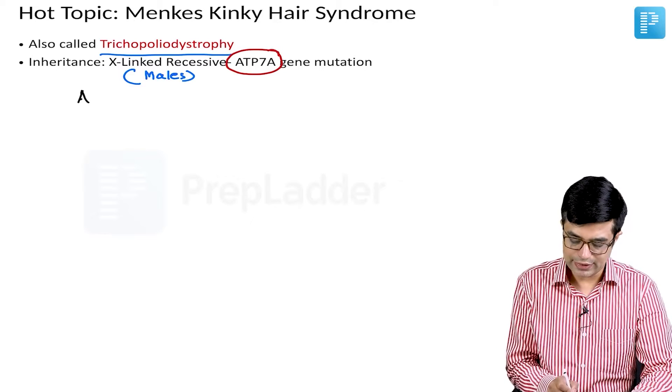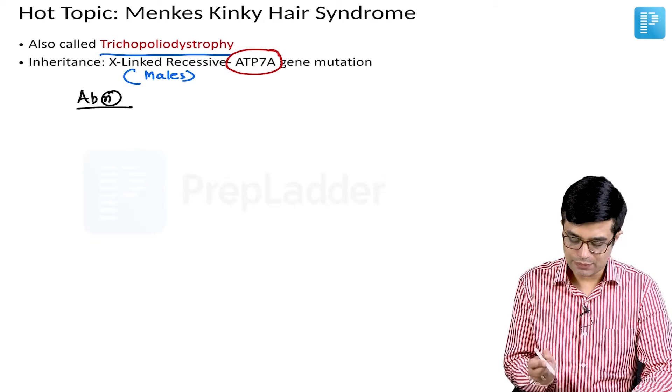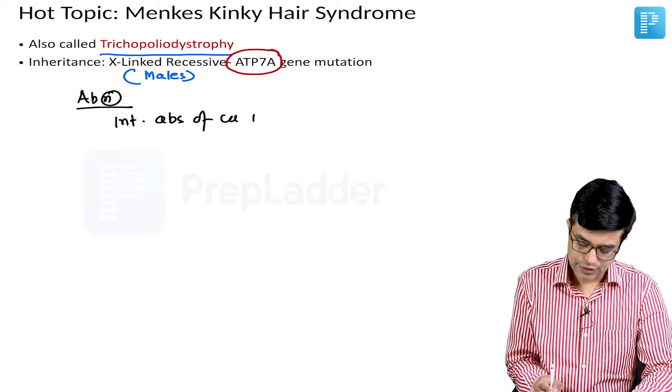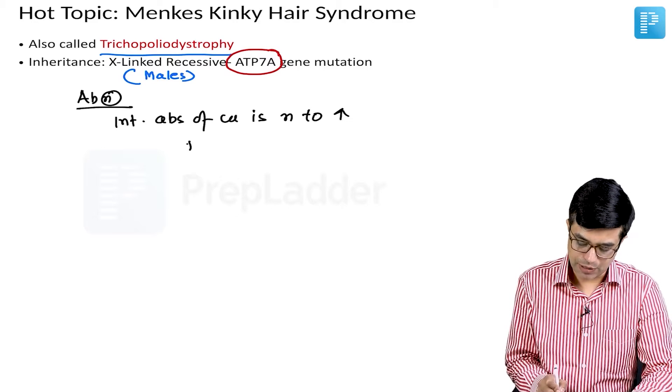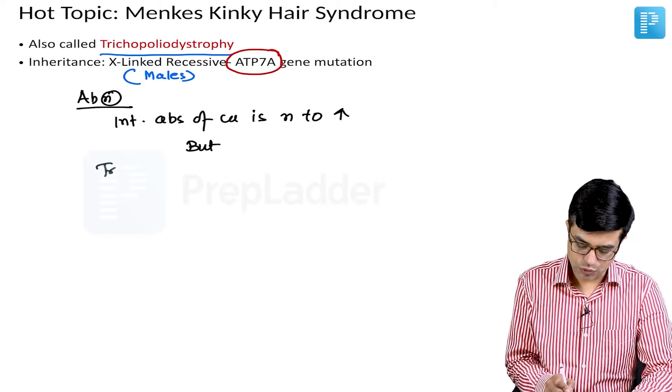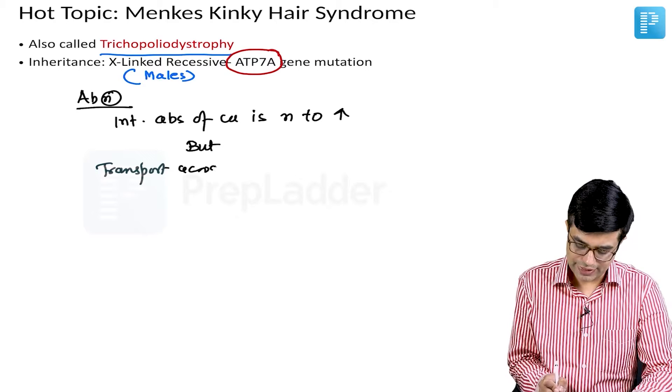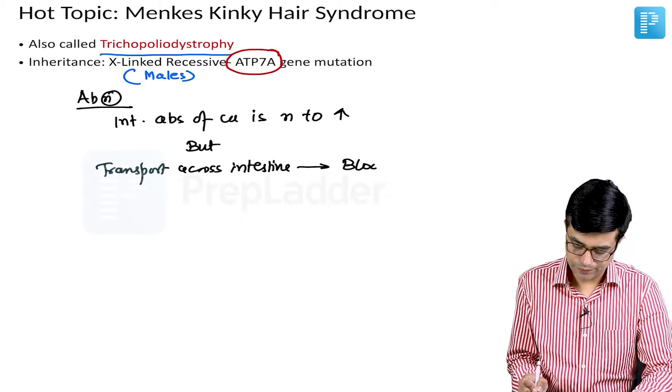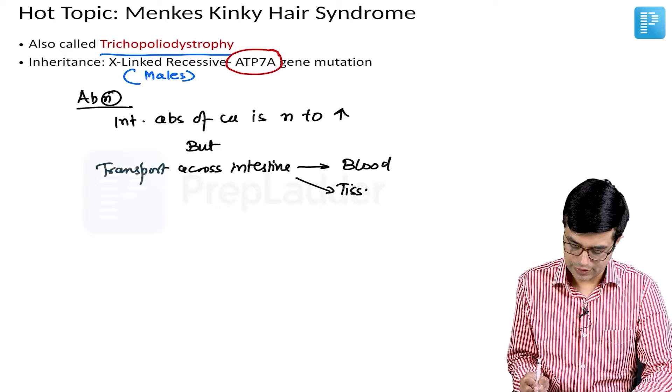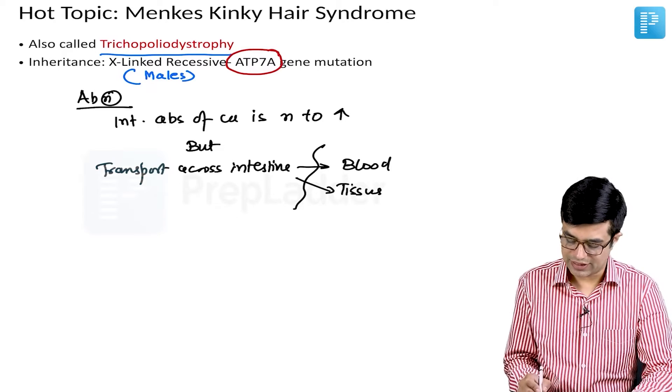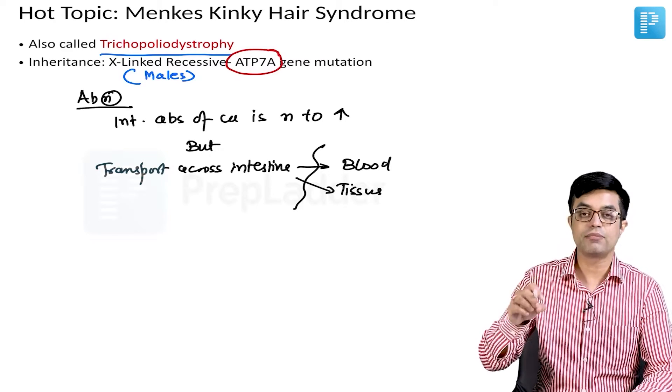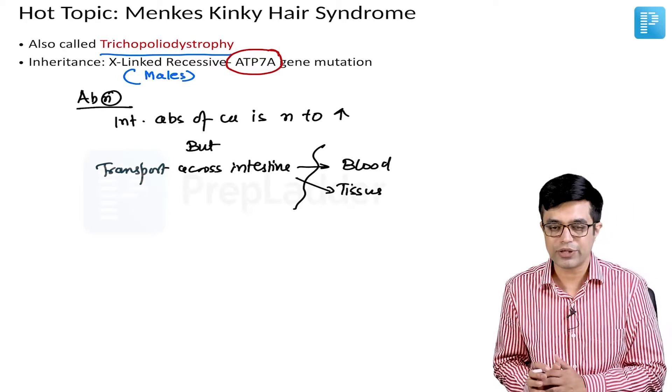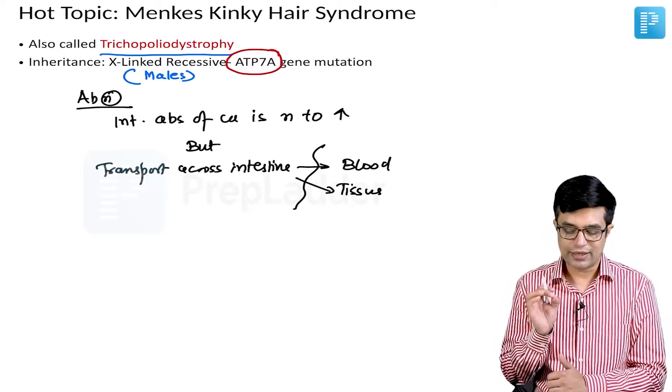What is the abnormality seen in these individuals? In these patients, the intestinal absorption of copper is normal to increased, but its transport across the intestine into blood as well as tissues is faulty. This is because this is the site where this specific carrier protein is involved, and because of abnormalities of this ATPase-dependent protein, you have Menkes Kinky Hair Syndrome developing.